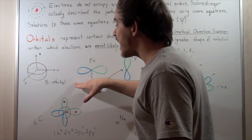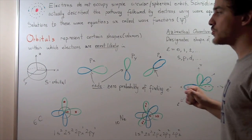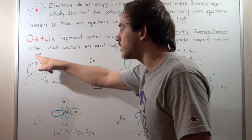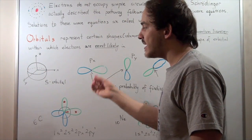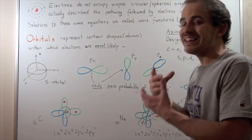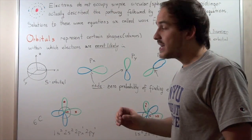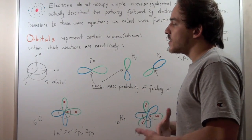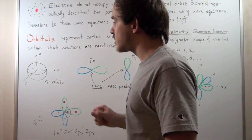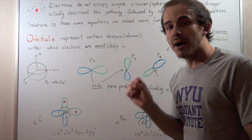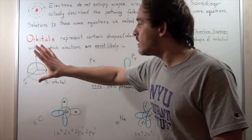Let's begin with the S orbital. The S orbital, which is one of the solutions to the wave equations, is given by a spherical shape. This sphere is the S orbital, and what it basically states is that our electron is most likely found within this sphere. Of course, since we're talking about probabilities, there is still a probability that our electron will be found outside this spherical shape, but it's very unlikely — and that's why we say it's most likely in this orbital.